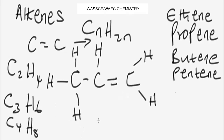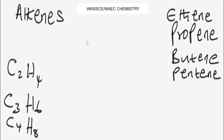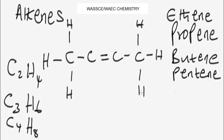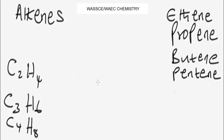Now what about the structure of butene? Let me show you how you draw the structure of butene. As usual, this double bond here shows that this is an alkene. Butene has four carbon atoms and eight hydrogen atoms, so the structure of butene is going to look like this. You can then attach the remaining two hydrogen atoms here. This will be the structure of butene.